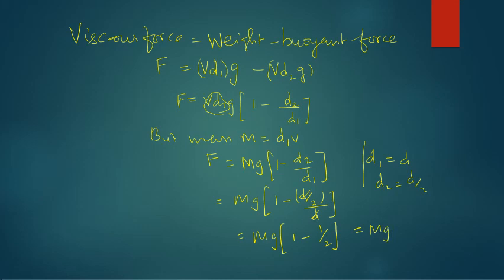So mg into 1 minus 1 by 2. That is 2 minus 1 by 2, which equals mg by 2.